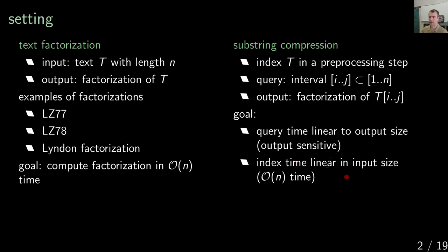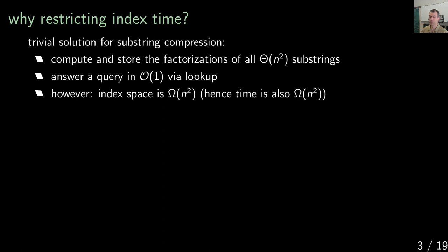Why do we want linear indexing time? Because otherwise, if we don't care about indexing time at all, the trivial solution would be to index all possible solutions — meaning you compute the factorization of each possible substring, and there are quadratically many. You put this factorization in a lookup table and query it at query time in constant time. However, this index costs quadratic space and therefore quadratic time.